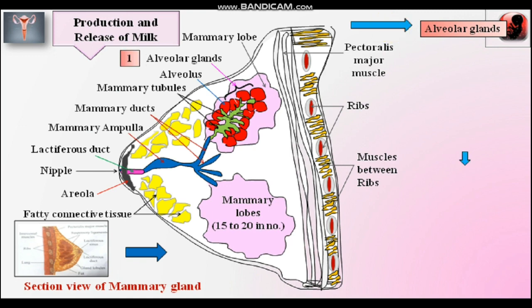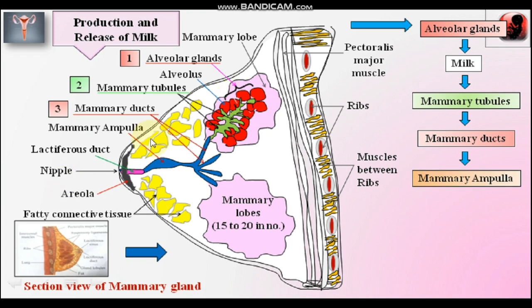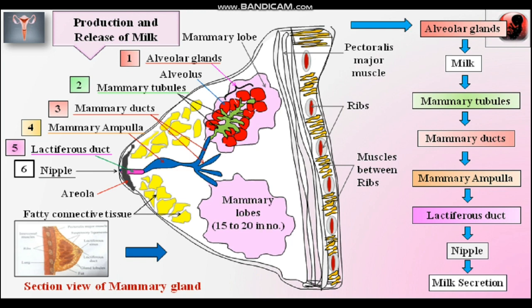Milk is secreted from the alveolar gland. From the alveolar gland it enters into the mammary tubules. From the mammary tubules it enters into the mammary ducts. From the mammary ducts it enters into the mammary ampulla. From the mammary ampulla, milk is ejected into the lactiferous duct, and then milk is secreted from the nipple and sucked by the baby. This is the route of milk secretion from alveolar glands up to the nipple region.